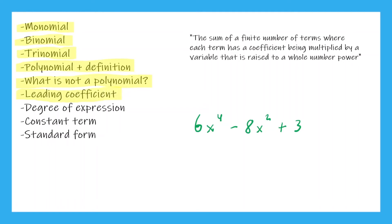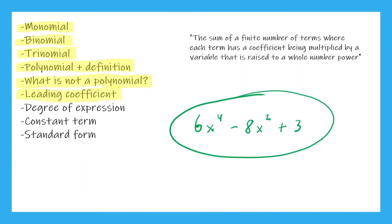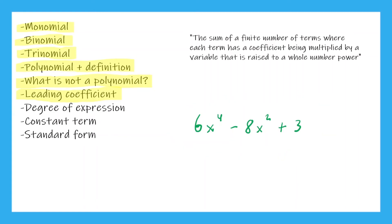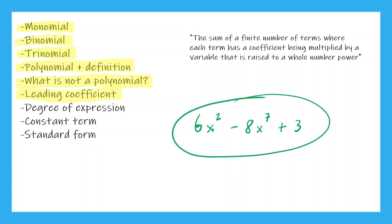Now what is the degree of this expression? The degree refers to the biggest exponent in the entire expression. So what's the biggest exponent here? It's 4, so this would be a fourth degree polynomial — or you can say the polynomial has a degree of 4. Now let's change the exponents: if we put a smaller exponent first and then a bigger exponent of 7, what is the degree? It's not 2 — because there's a bigger exponent. The degree is 7, or you can say it is a 7th degree polynomial.